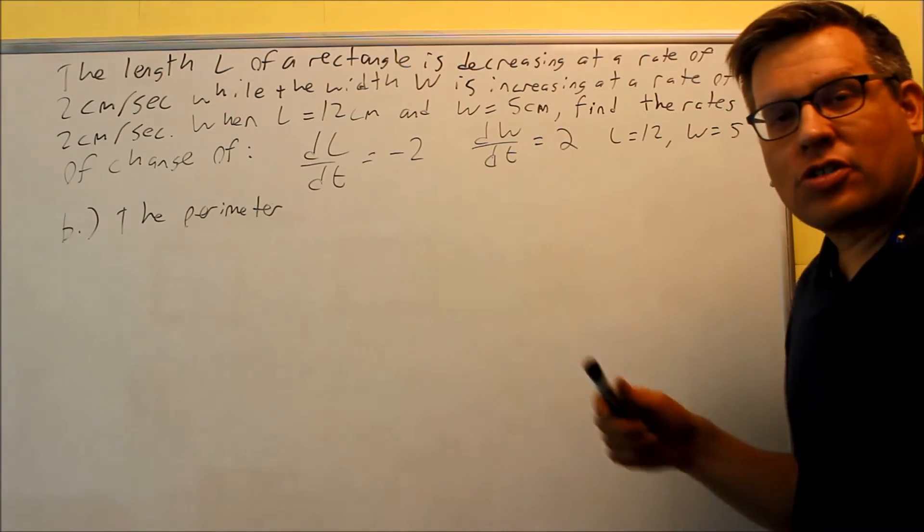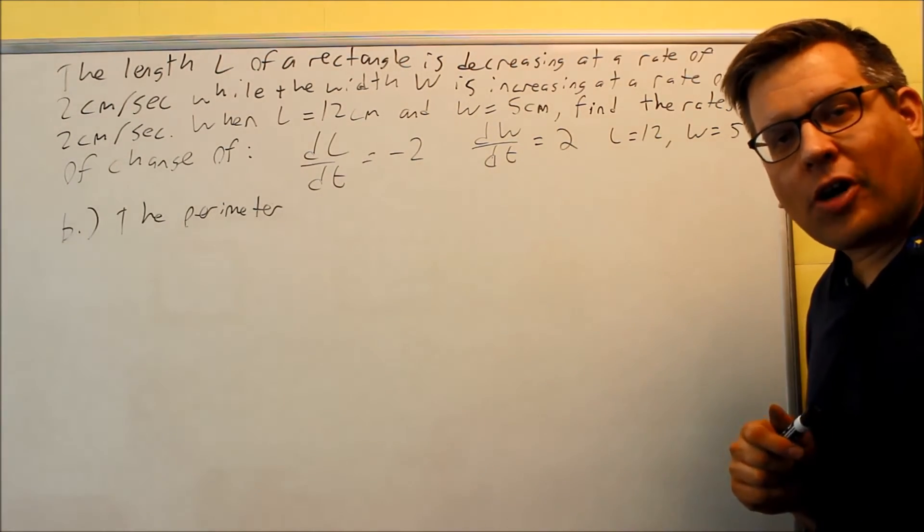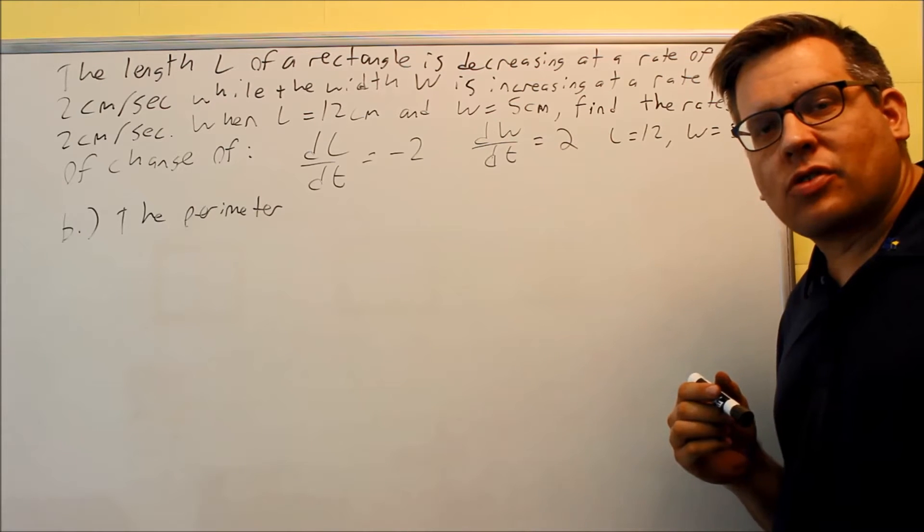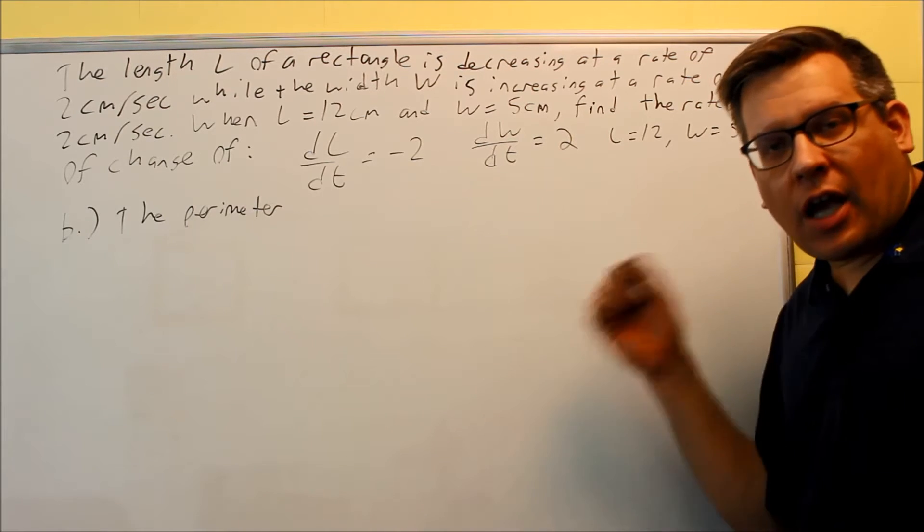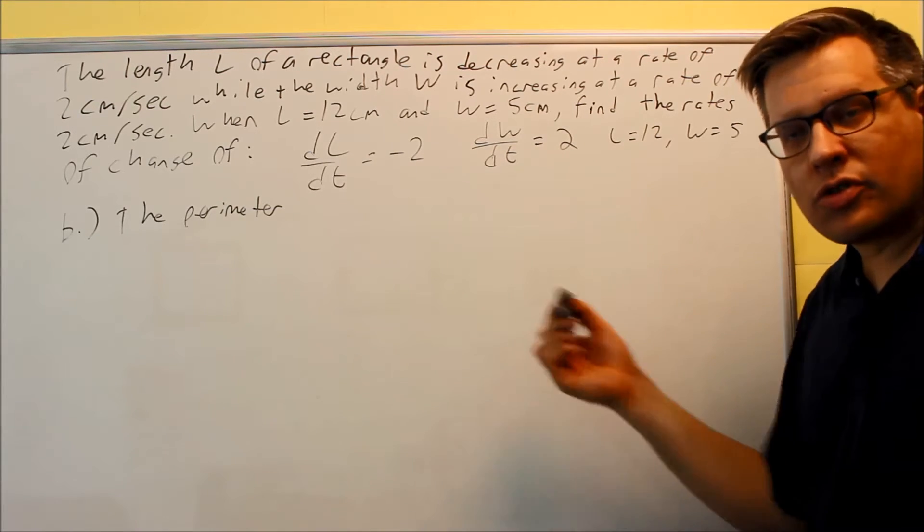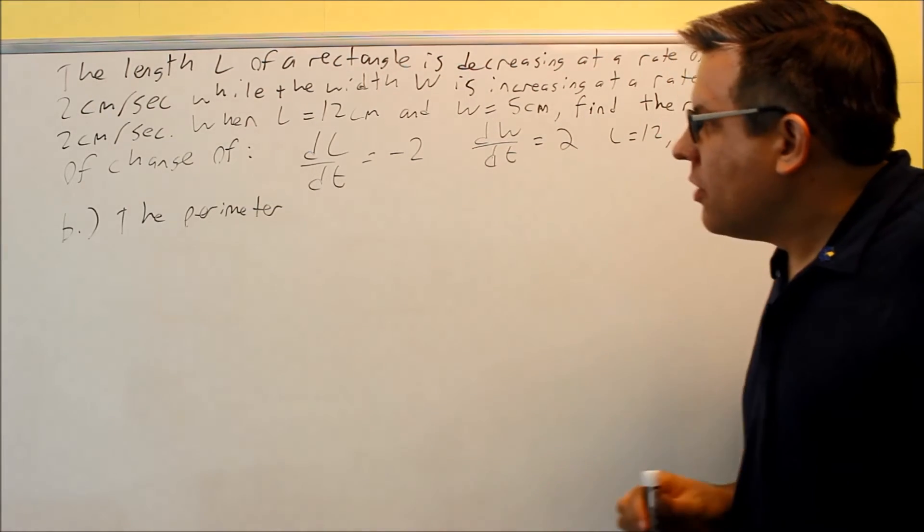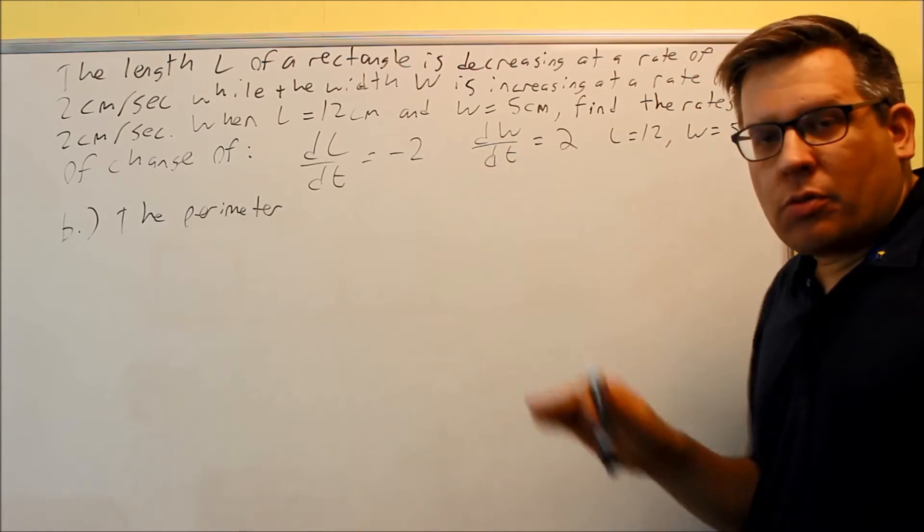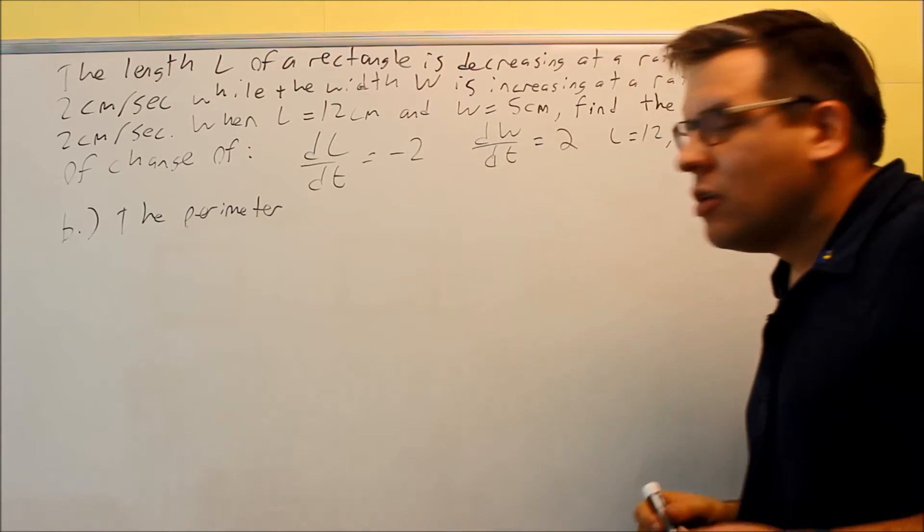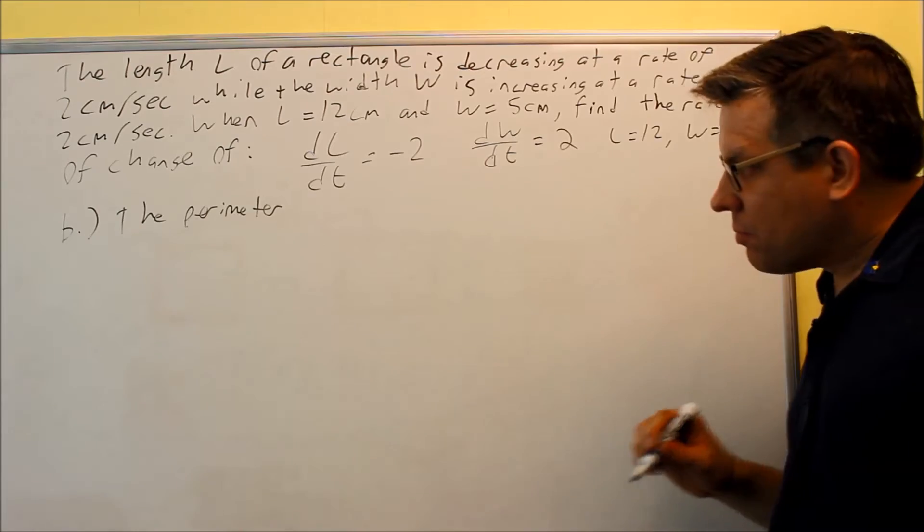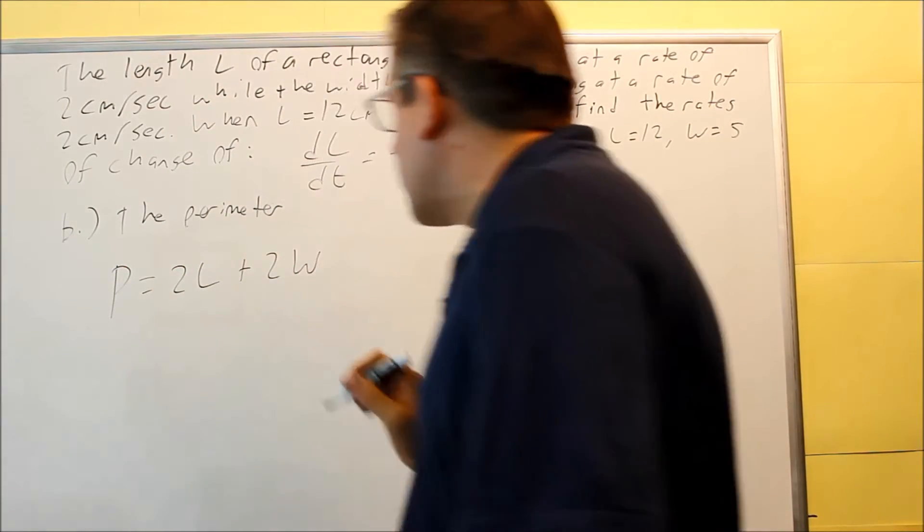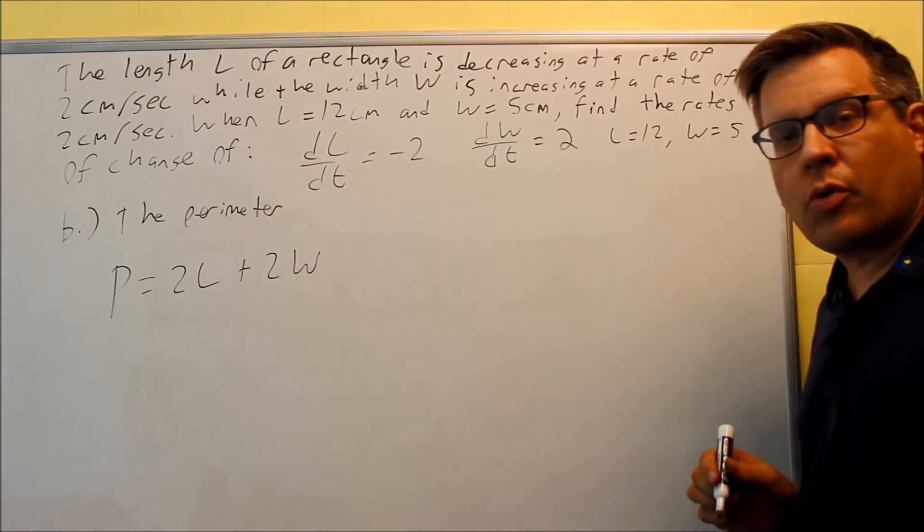Next we'll do part B. I should mention that on the previous problem, on part A, we got 14. That would be considered increasing because it's a positive number. Sometimes the questions you do online may ask whether it's increasing or decreasing. The final answer is positive, it's going to be increasing, so that one was increasing. This time, they want us to find the rate of change of the perimeter. Everything else is all the same, we've already identified all this information, we just now have to use the correct formula. For a perimeter, your perimeter is equal to 2 times the length plus 2 times the width.